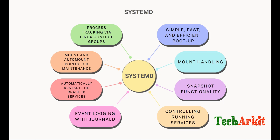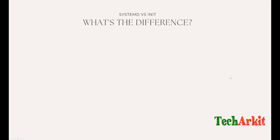systemd also supports simultaneous socket and D-Bus activation for faster service startup, allowing services to start more quickly when needed. Other improvements include dynamically controlling services, job scheduling, user login management, on-demand service activation, and battery optimization. These are among the many major improvements included in systemd.